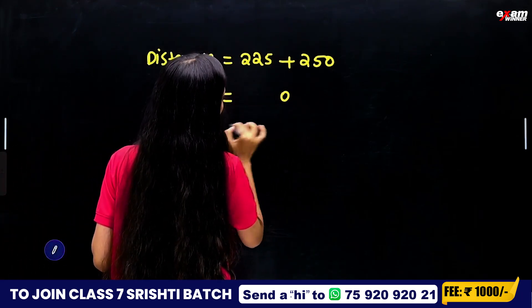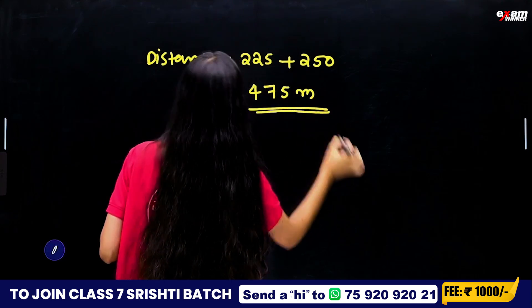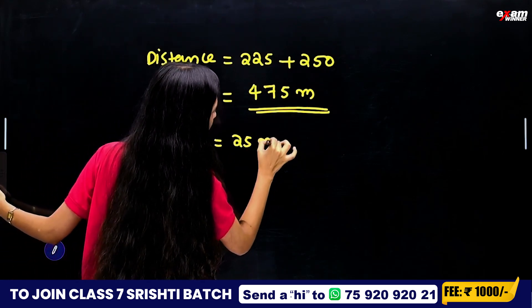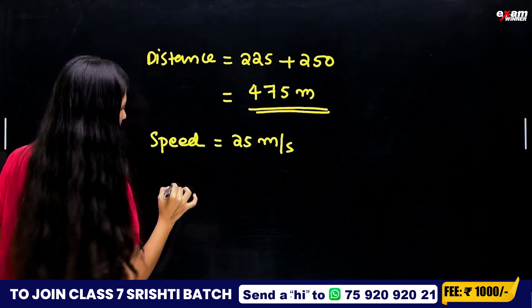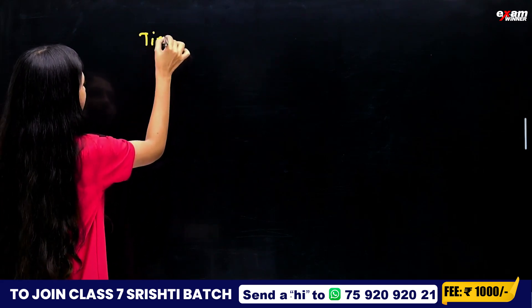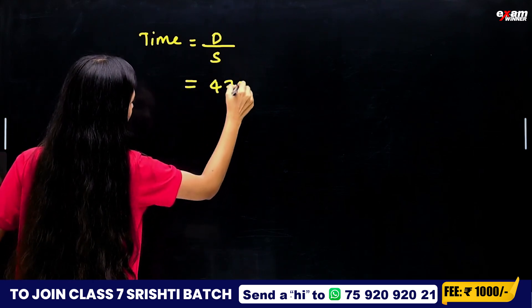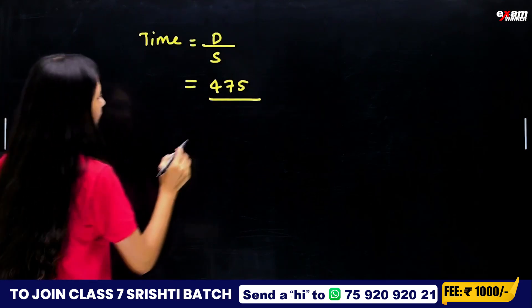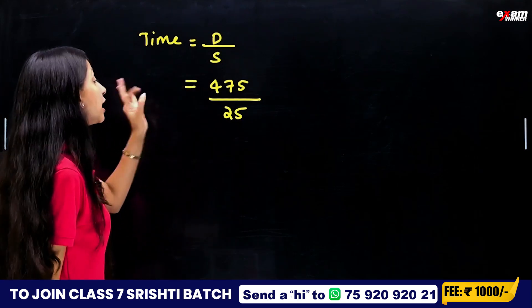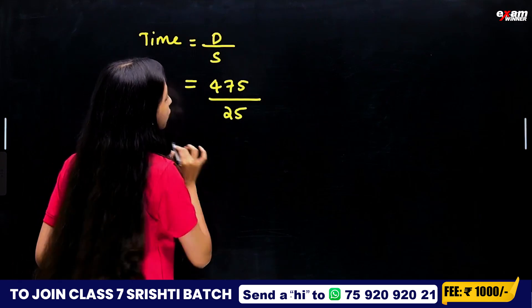The distance is 475 meter. The speed is 25 meter per second. Time equals distance by speed: 475 divided by 25 is calculated.